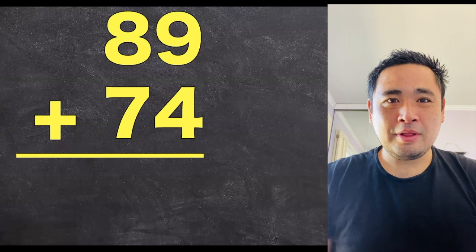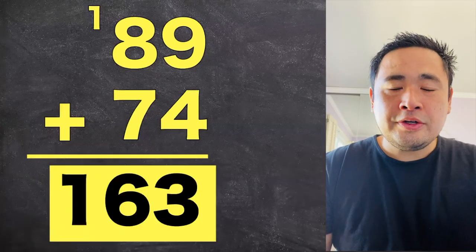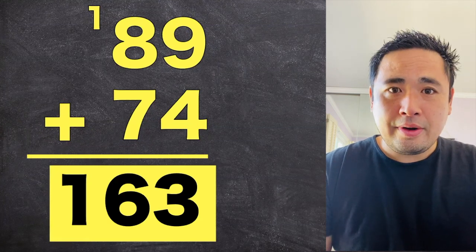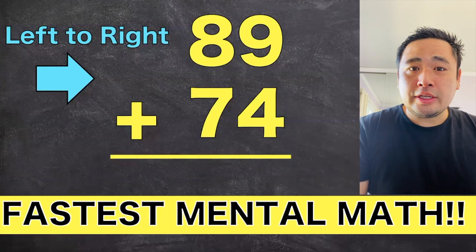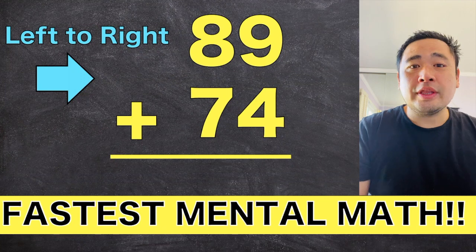But what if I gave you a problem like this one? You can certainly do it, but there's carryovers and an extra digit in the hundreds column. It's just a lot to remember. So fast mental math is actually done the complete opposite way. Instead of going from right to left, we're going left to right.